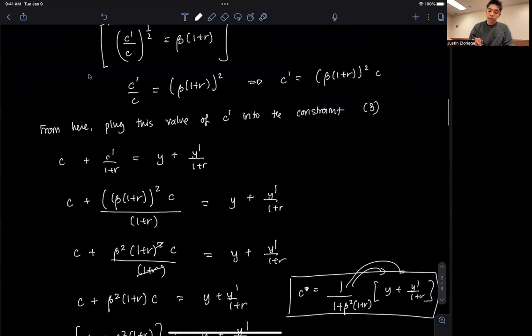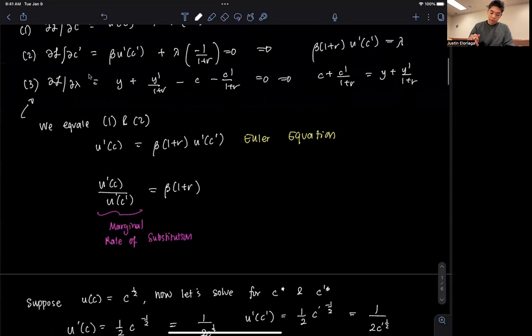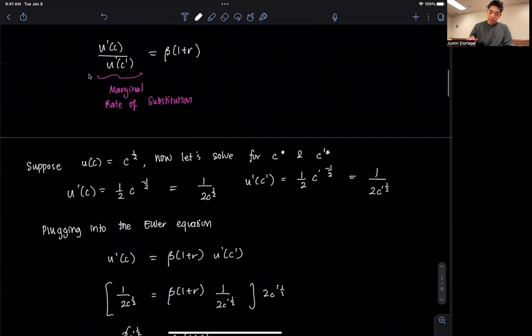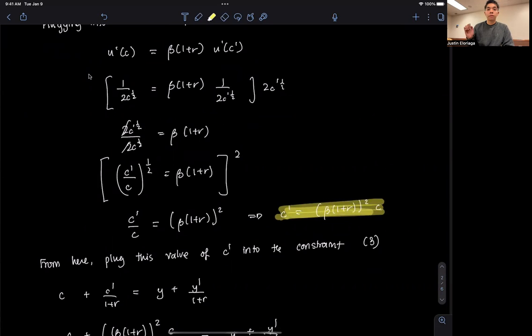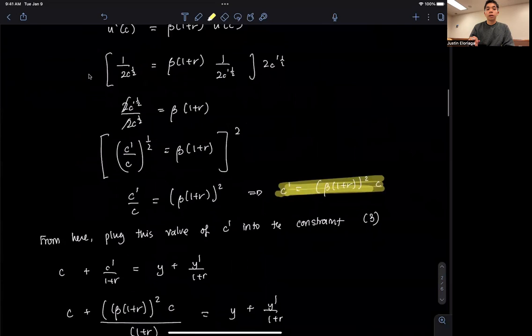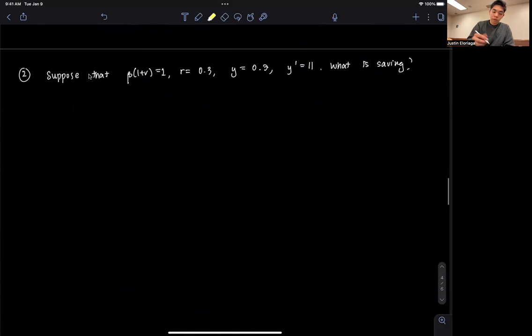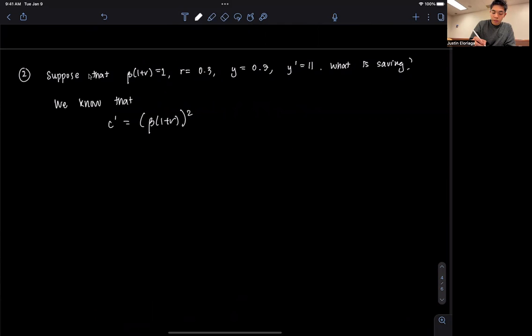So if you recall, we derived the Euler equation as this equation, and in this particular model, we deduced that this was the end result given the functional form. So we know that C prime is equal to beta times 1 plus r squared C, which is just beta squared times 1 plus r squared times C.